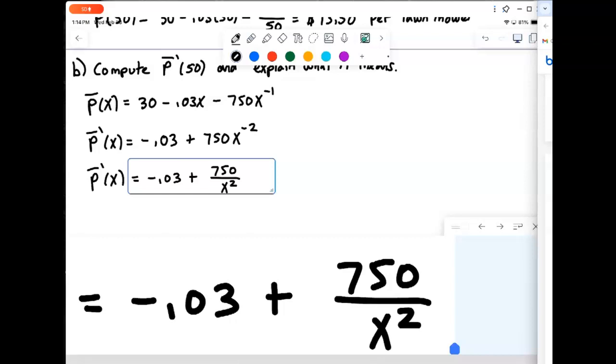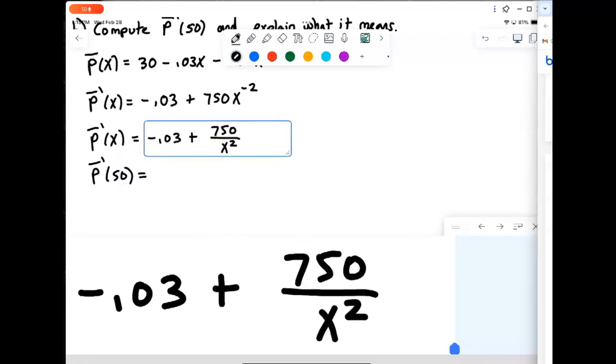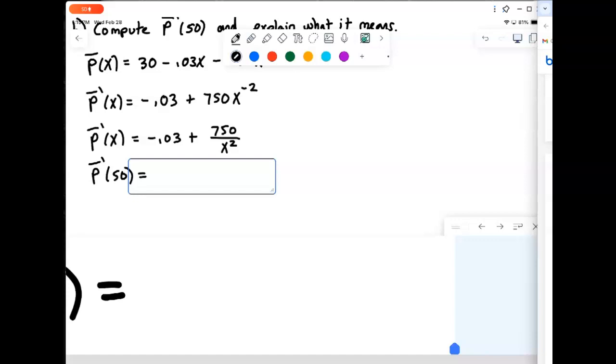Okay, and then we want to evaluate that when x is 50. So P bar prime of 50. So go ahead and plug in 50, and we evaluate that, and what we find out is that's going to be 0.27.